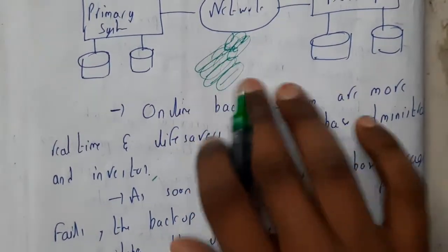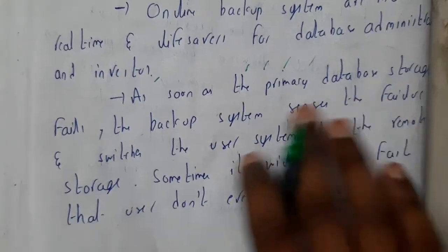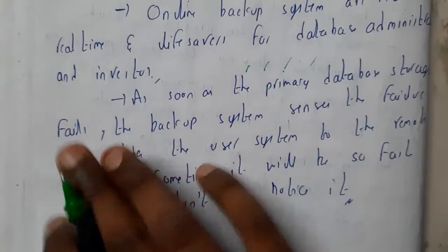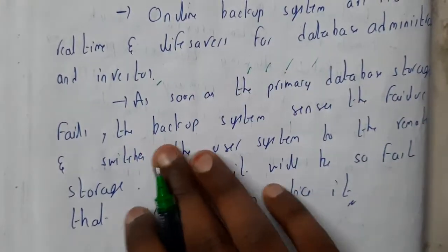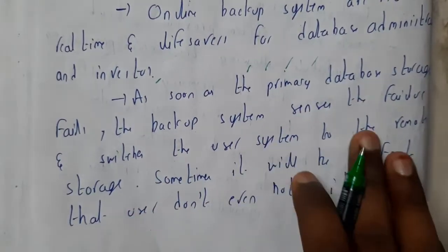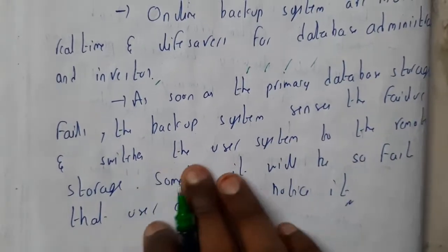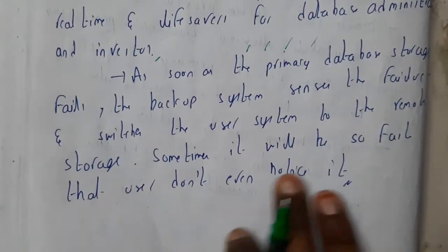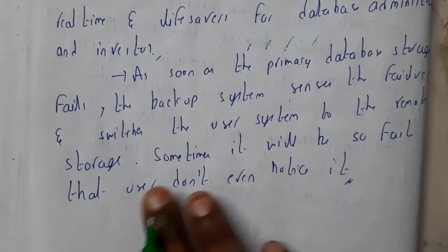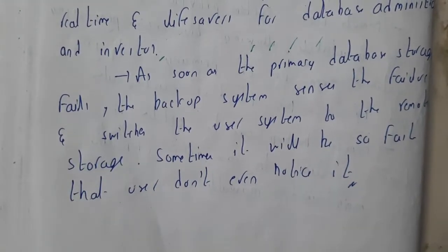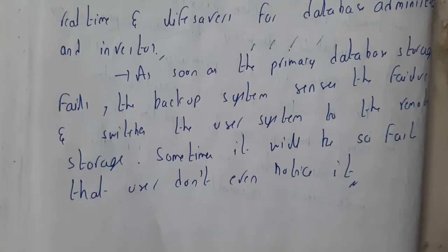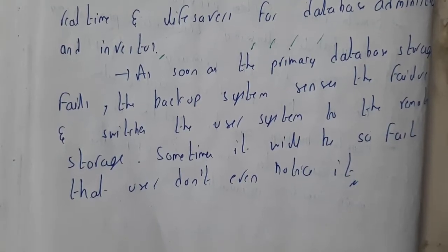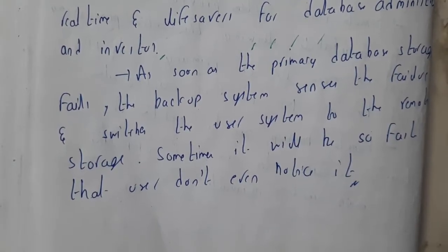As soon as the primary database storage fails, the backup system senses the failure and switches the user's system to remote storage. Sometimes the user will not even identify this — they cannot even tell the difference between the two. So I hope everyone has a small idea of this concept now.